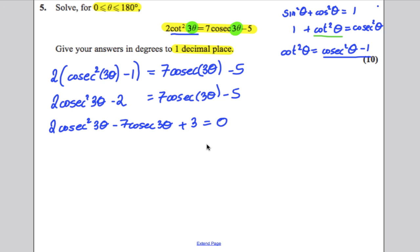Can I factorize this? Well, yes, I can. You could always use the formula here, but if you just think ahead, you might be able to factorize. This factorizes as two cosec three theta here and cosec three theta here. I've got to multiply to positive three and add up to negative seven. So, if I have a negative three here and a negative one there, that would give me the negative six cosec and the negative cosec. So, I'd have negative seven cosec and these two multiply to three. So, I've got it. So, if these two are equal to zero, then on the one hand, I have got that two cosec three theta minus one is zero or cosec three theta is equal to three.